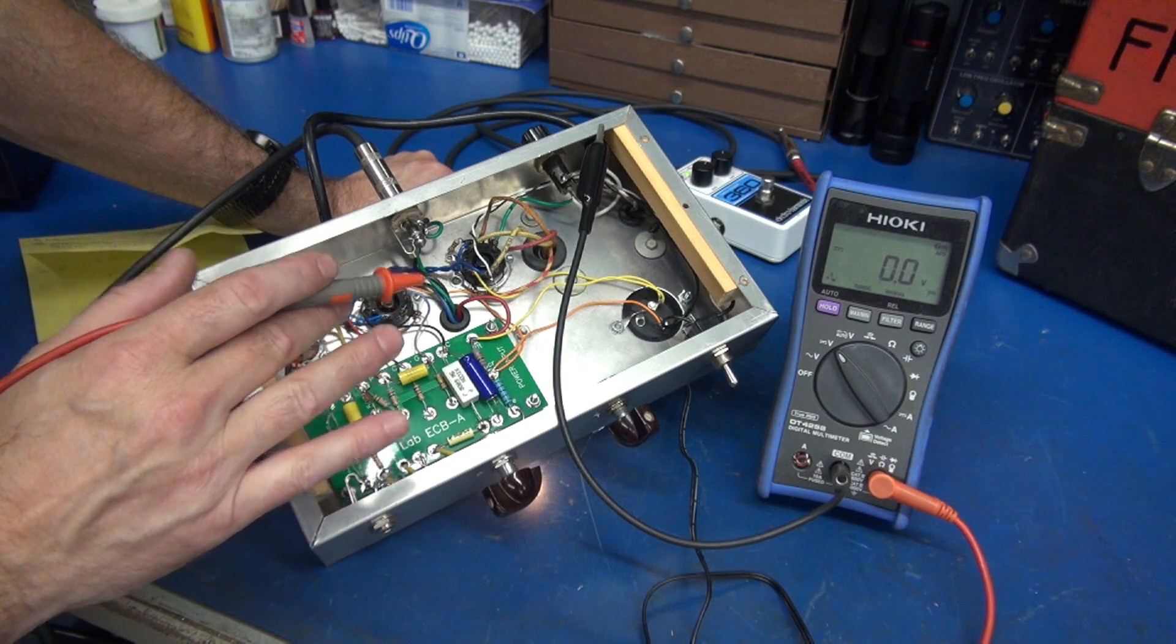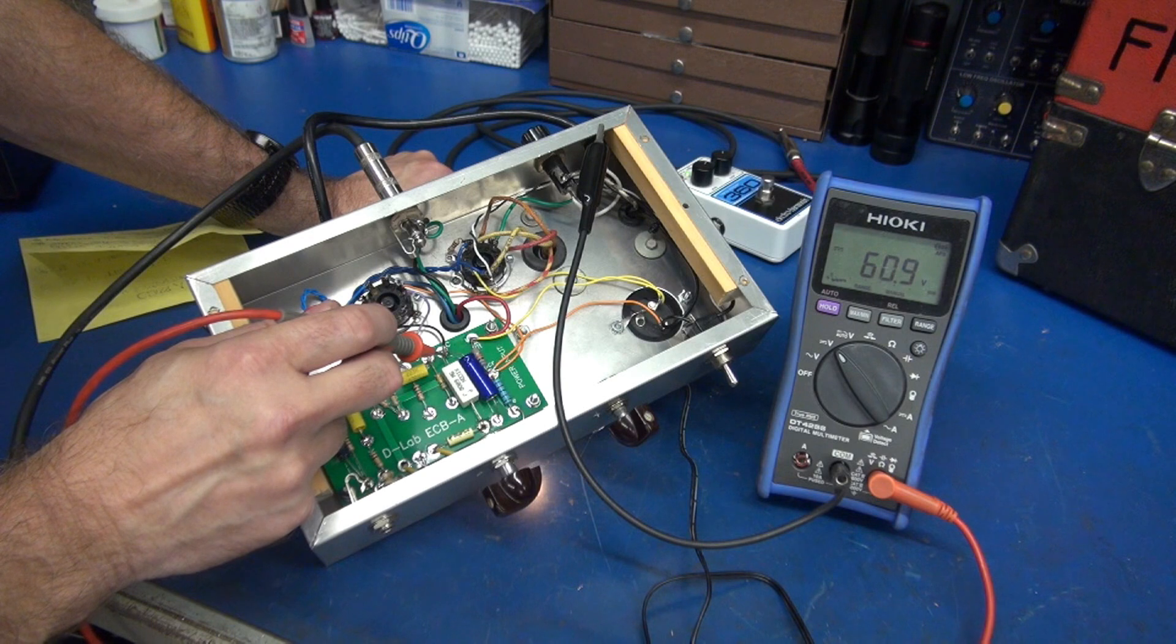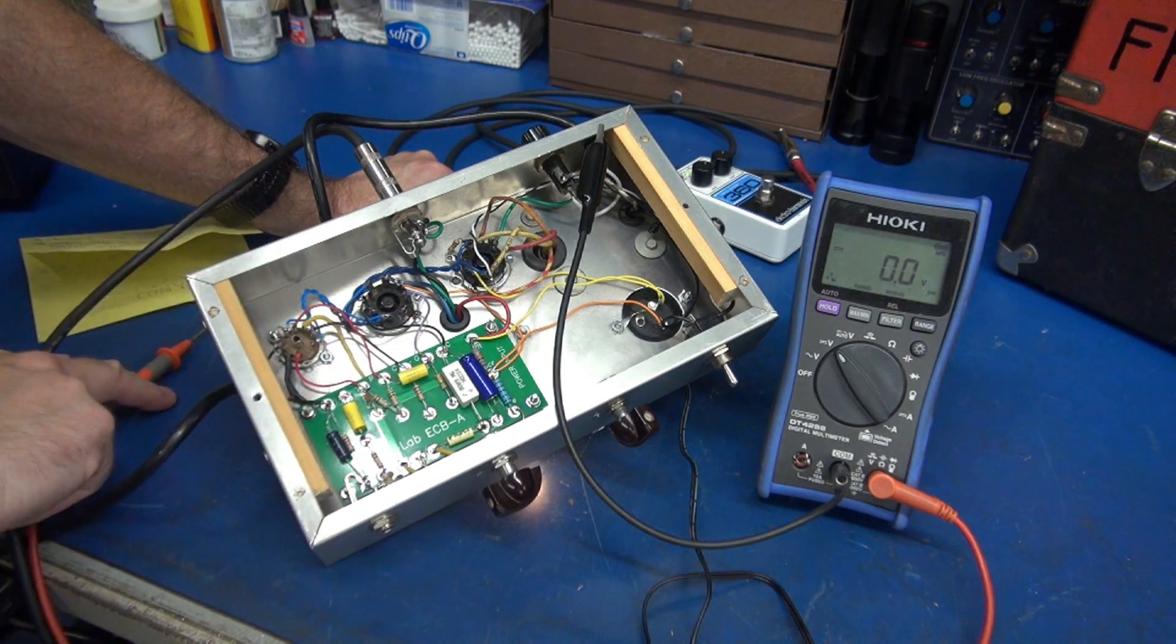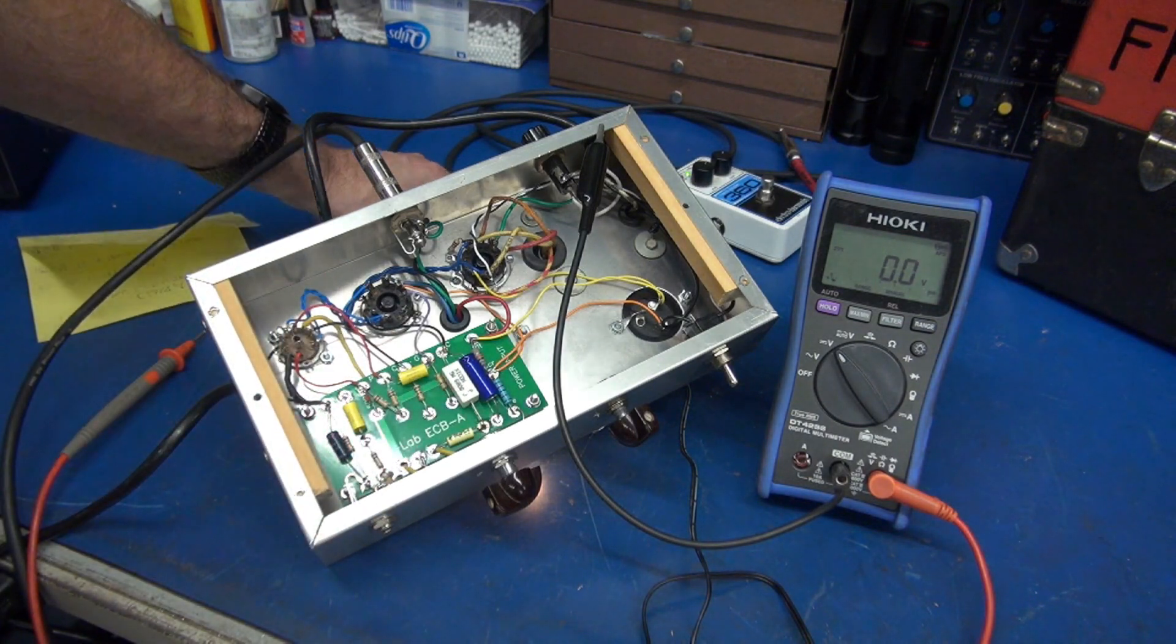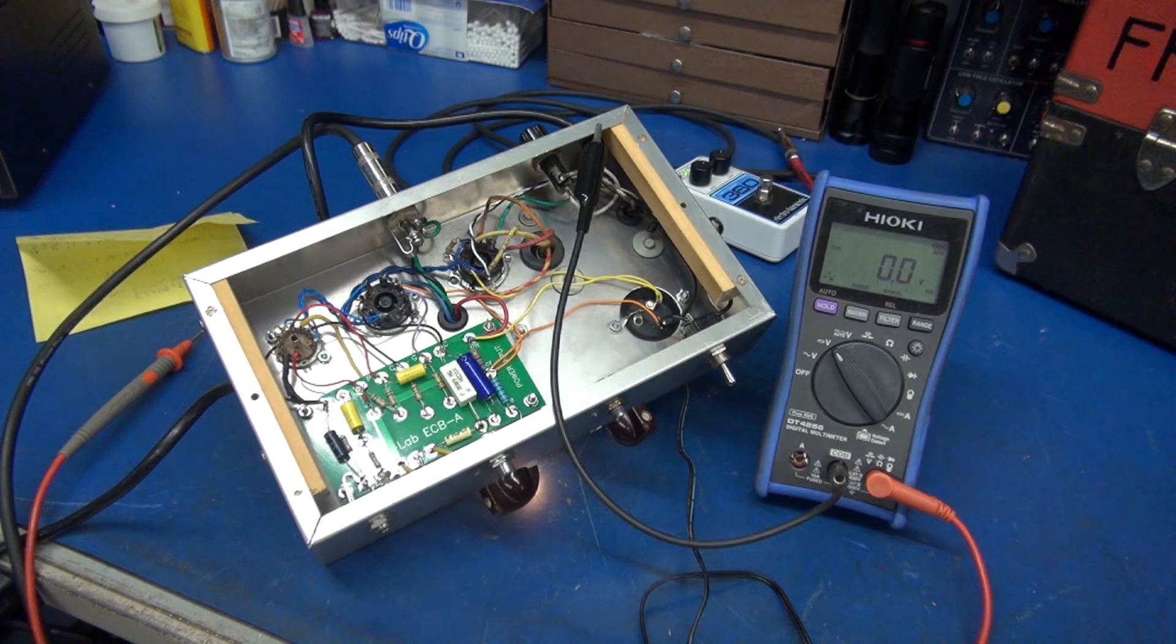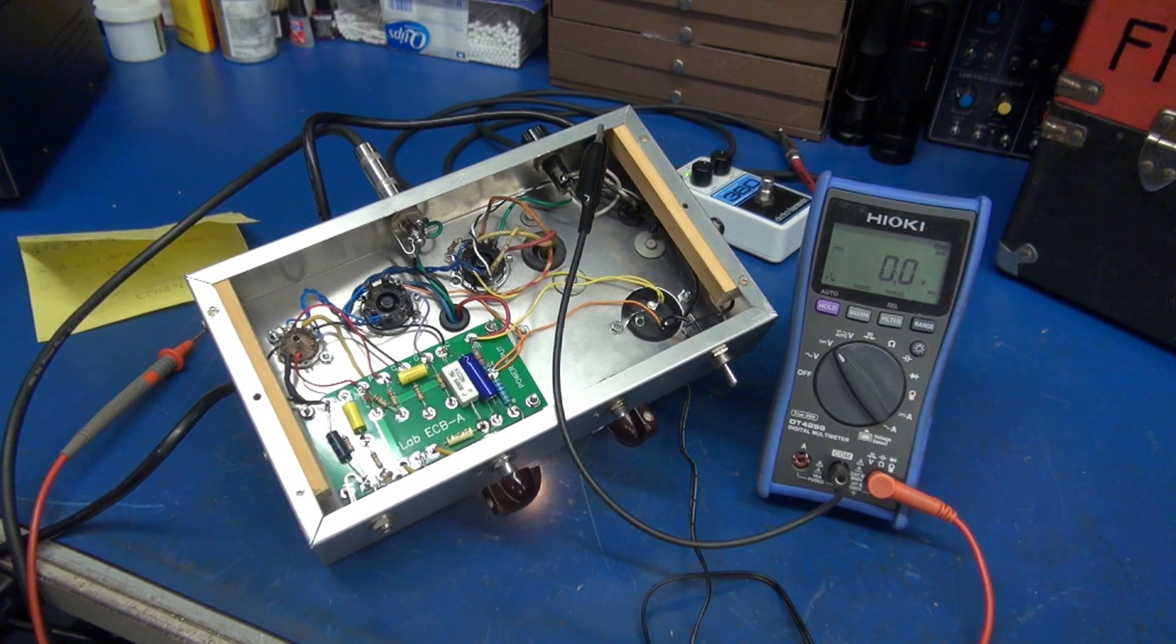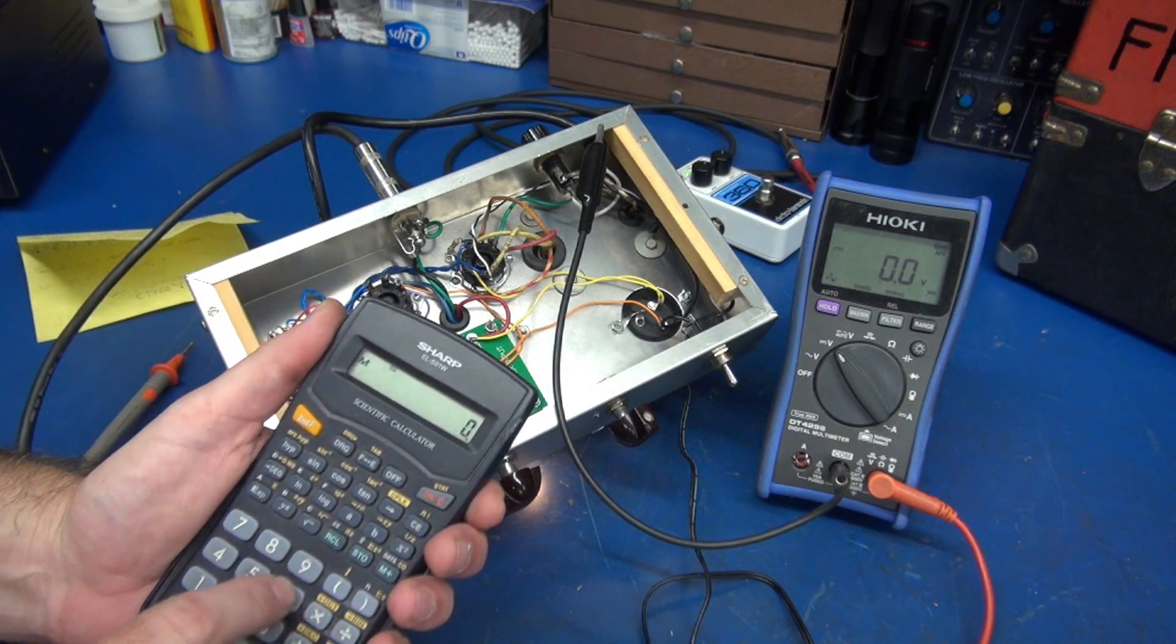Now I have a different bias resistor in mine than you would have on your typical champ. A champ would normally be a 470 ohm resistor, mine has a 680. So for the fun of it, let's go ahead and say we've got 61 volts, we're going to divide that by 680 ohms. That says I have 89 milliamps of current going through that 6V6.